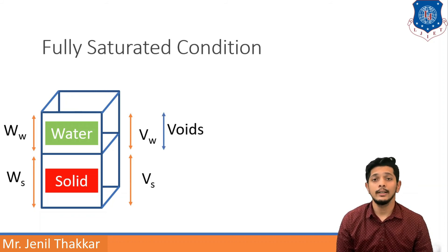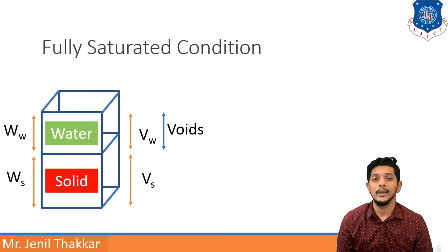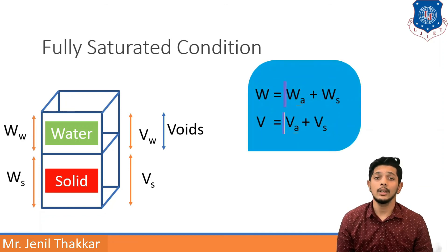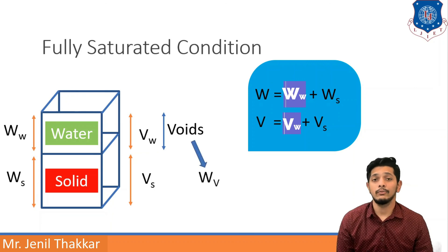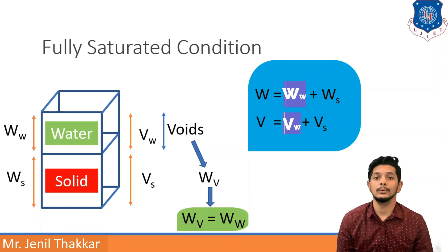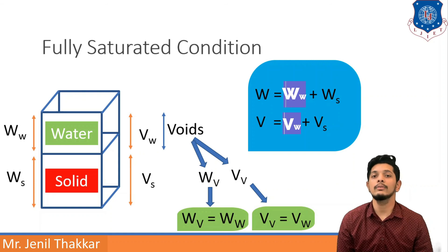In the fully saturated condition, voids are comprised of only water — just as in the fully dry situation there was only air in the voids, here there is only water. Total weight W equals Ws plus Ww. Total volume V equals Vs plus Vw. Weight of voids Wv equals Ww. Volume of voids Vv equals Vw.